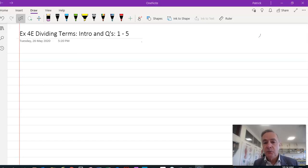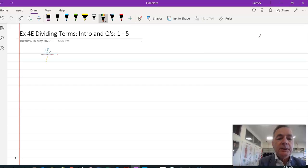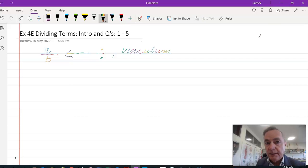Division of terms in algebra is written like a fraction. It would be written like this: A over B, or A divided by B. This line here means divided by, and it's also called a vinculum, which is a Latin term meaning division. So in algebra, that's how we write division.